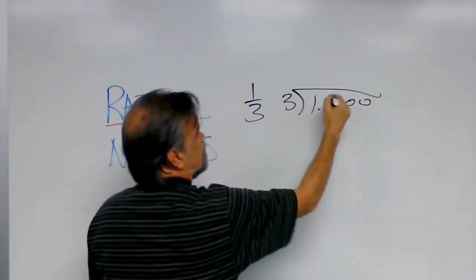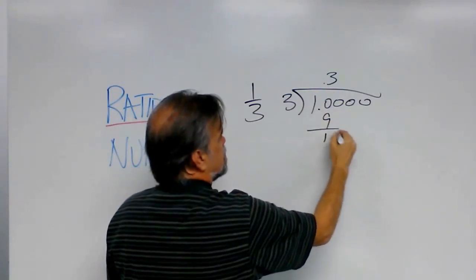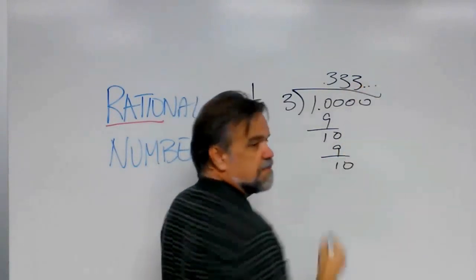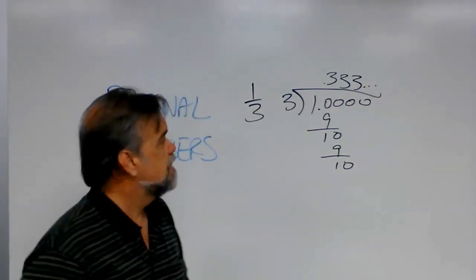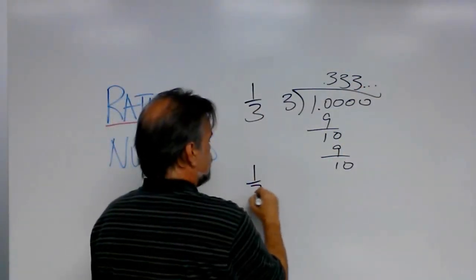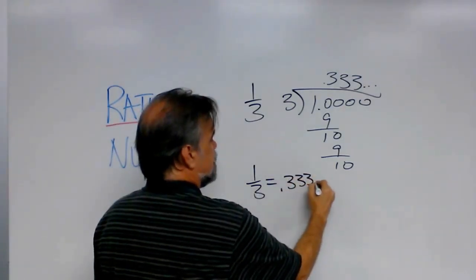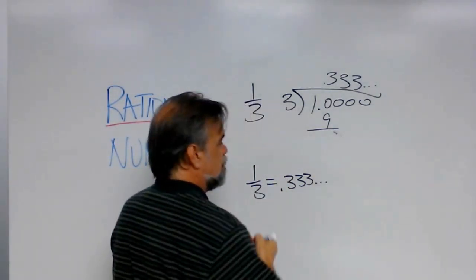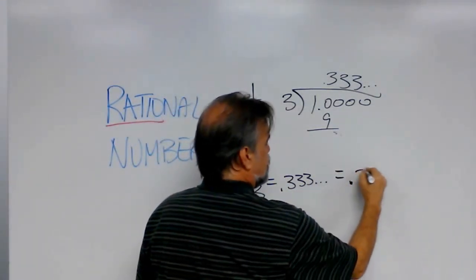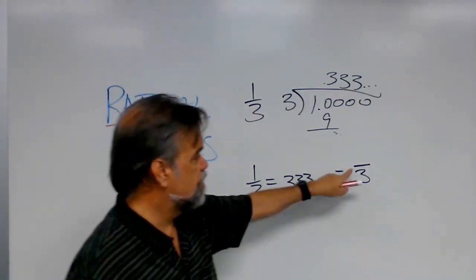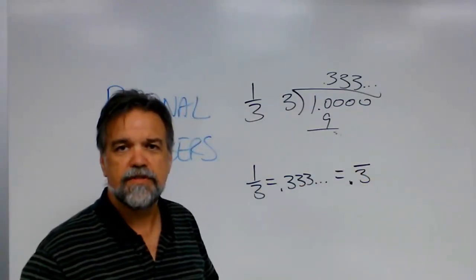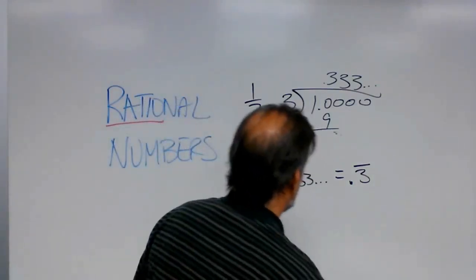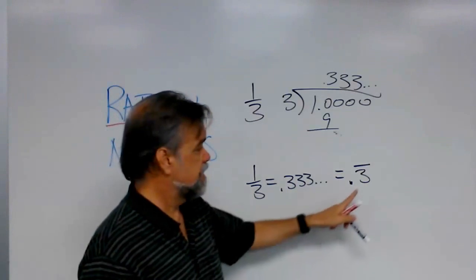and you can see that you just get caught in this loop. So, what that means is one-third equals point-three-three-three, going on infinitely long, and that equals, the way we write that is, point-three-bar. Point-three with a line over it, we call that point-three-bar, and it simply means point-three repeating forever. So, one-third equals point-three-bar.